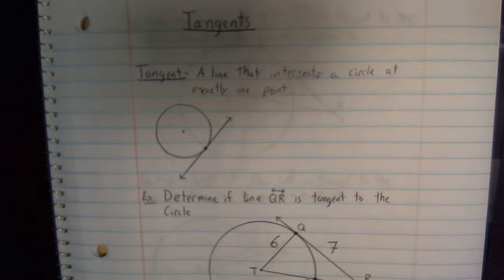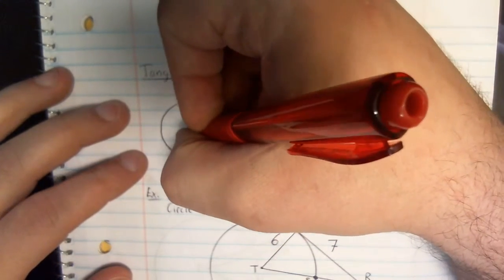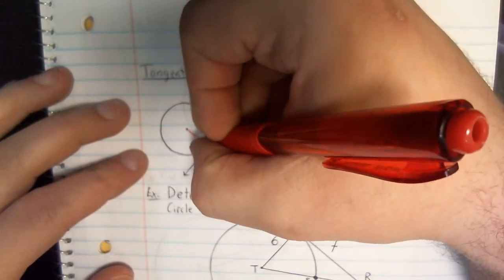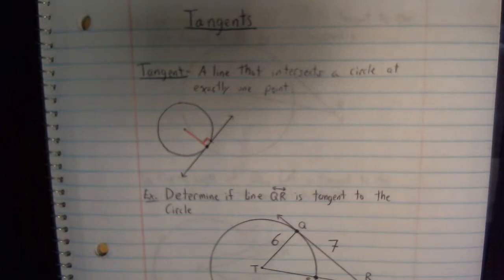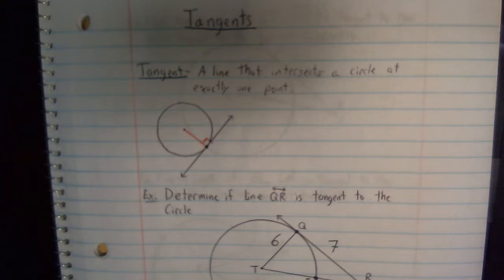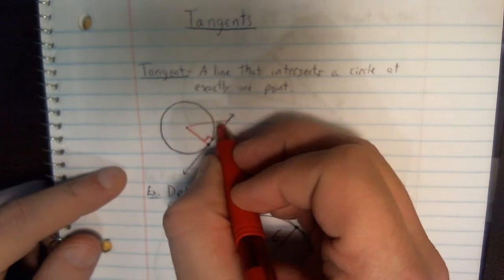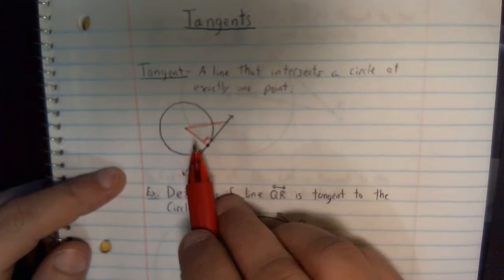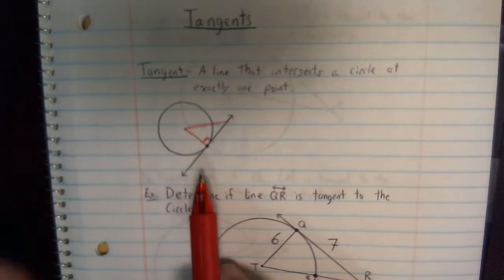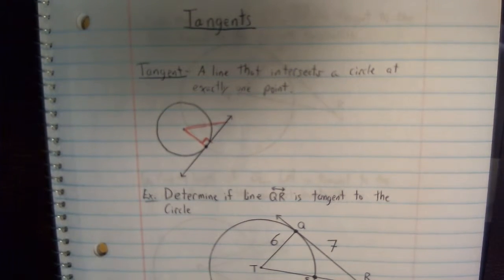Now, something that's pretty neat about tangents that we're going to be using quite a bit is the fact that the radius and the tangent are perpendicular. What that means is they create a 90 degree angle. That's going to be super useful because a lot of these problems are going to be asking us to determine if we have a tangent or asking us for a length of something. And what we can then do is if we imagine that we have another line drawn, you can see that we have a right triangle, which means we can use Pythagorean theorem.